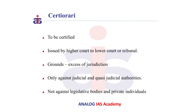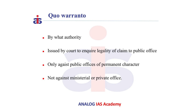Certiorari can be issued against judicial, quasi-judicial authorities, and administrative authorities affecting rights of individuals, but it is not available against legislative bodies and private individuals. Finally, Quo Warranto is issued by a court to inquire into the legality of a person's claim to a public office. It can be issued only when a public office is created by statute or by the Constitution. It cannot be issued against a ministerial office or private office. Unlike the other four writs, this can be sought by any interested person, not necessarily an aggrieved person.